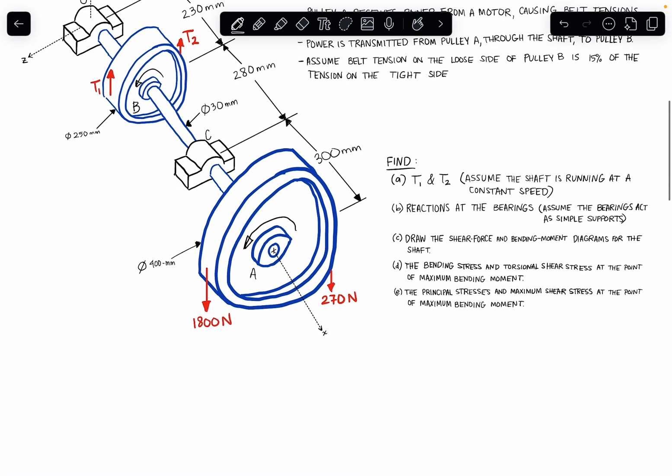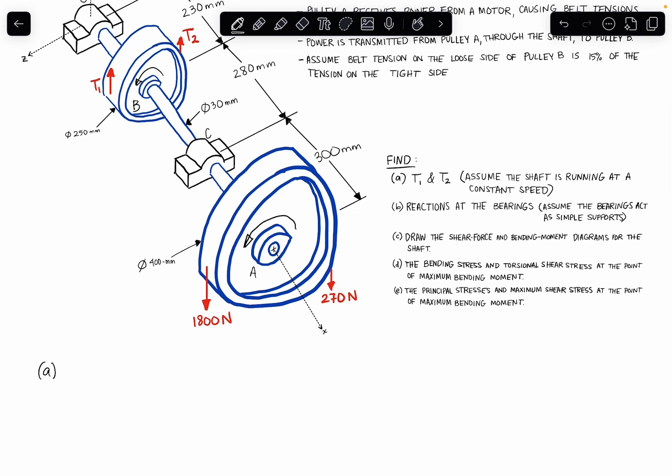So what does that tell us that the shaft is running at a constant speed? Think back all the way to Newton's second law, and we'll go with the moment form of Newton's second law. We know that the sum of the moments is equal to the moment of inertia times angular acceleration. Well, if we're running at a constant rotational speed, that means that our angular acceleration is equal to zero, right?